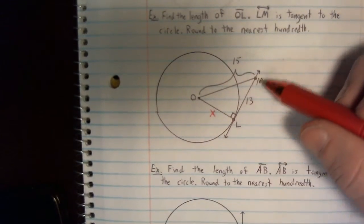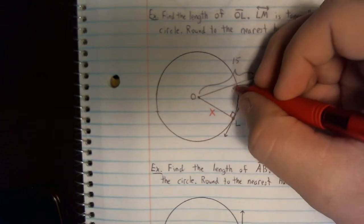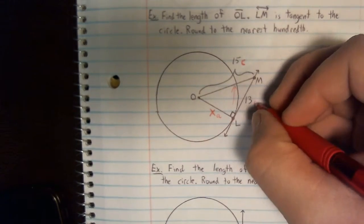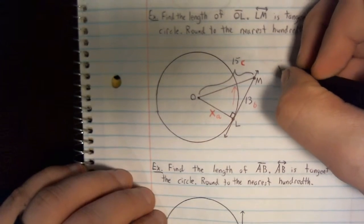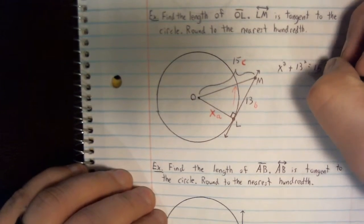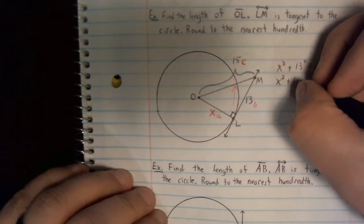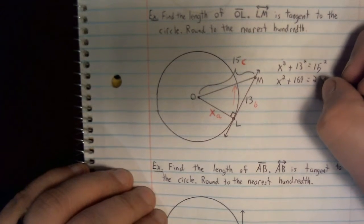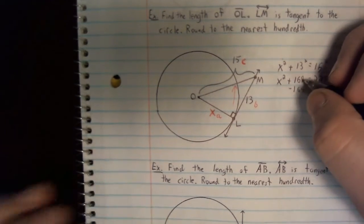Now they tell us that LM is tangent. That means that our 90 degree angle points out our C value for us. That makes these two sides A and B. We've got X squared plus 13 squared equals 15 squared. Can't do anything with that X yet. 13 squared is 169. 15 squared is 225. Let's subtract away 169 from both sides.